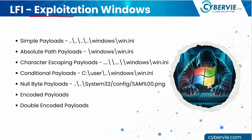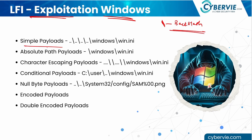If the web server is a Windows server, the payload uses backslashes instead of forward slashes, as Windows uses backslashes in its directory structure. Everything else is the same — simple payload, absolute path payload, character escaping payload, conditional payload, null byte payload, encoded payload, and double encoded payload — all tried one by one.